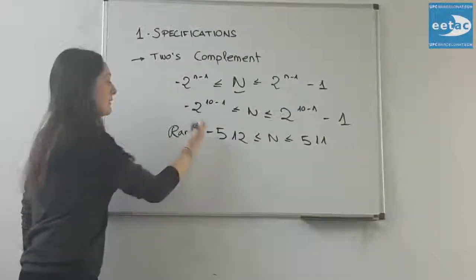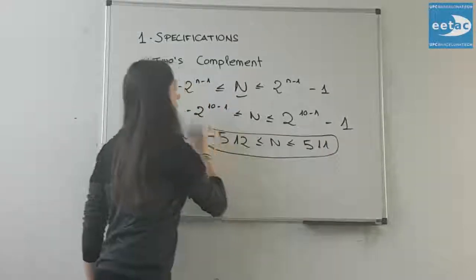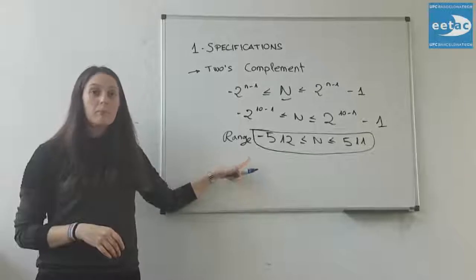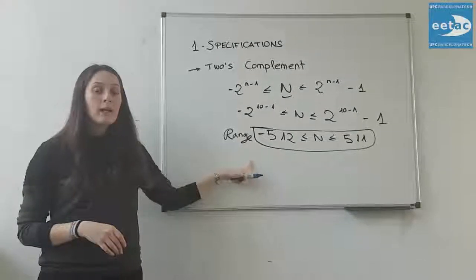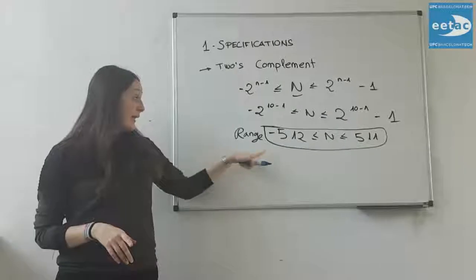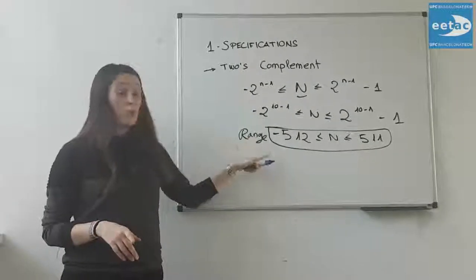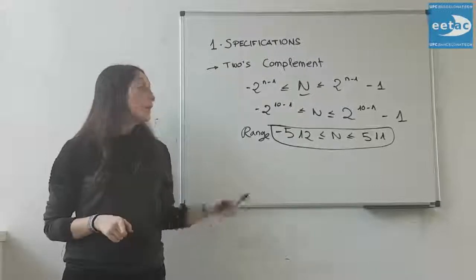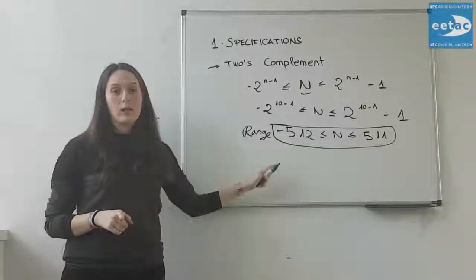This is the range of our system. It is important to know this range because overflow will define if we are between this range or if we are out of this range. Overflow will be a 1 if we are out of this range.